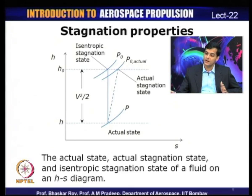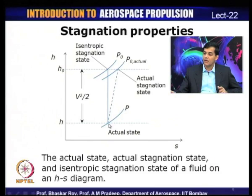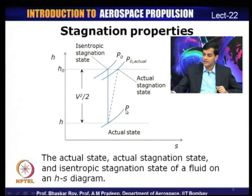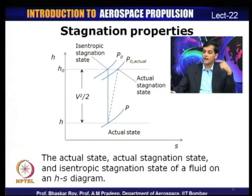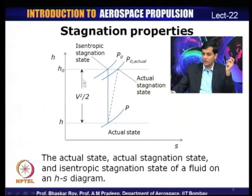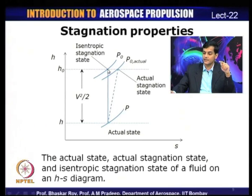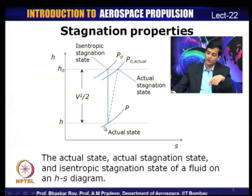The actual state of the fluid is represented at state 1 on the H-S diagram — initial state with enthalpy H on a constant pressure line P. The corresponding stagnation parameters: H₀ = H + V²/2. For an isentropic process (constant entropy, straight vertical line), we reach the isentropic stagnation state with enthalpy H₀ and stagnation pressure P₀.